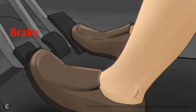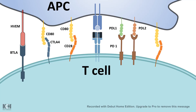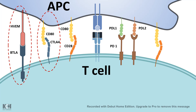Apart from the CD80 and CTLA-4 interaction we have looked at so far, there are many other such interactions found between T-cells and APCs. APCs express HVEM, which is another ligand for the BTLA receptor. This BTLA receptor is expressed in T-cells and B-cells, and this interaction is also inhibitory.